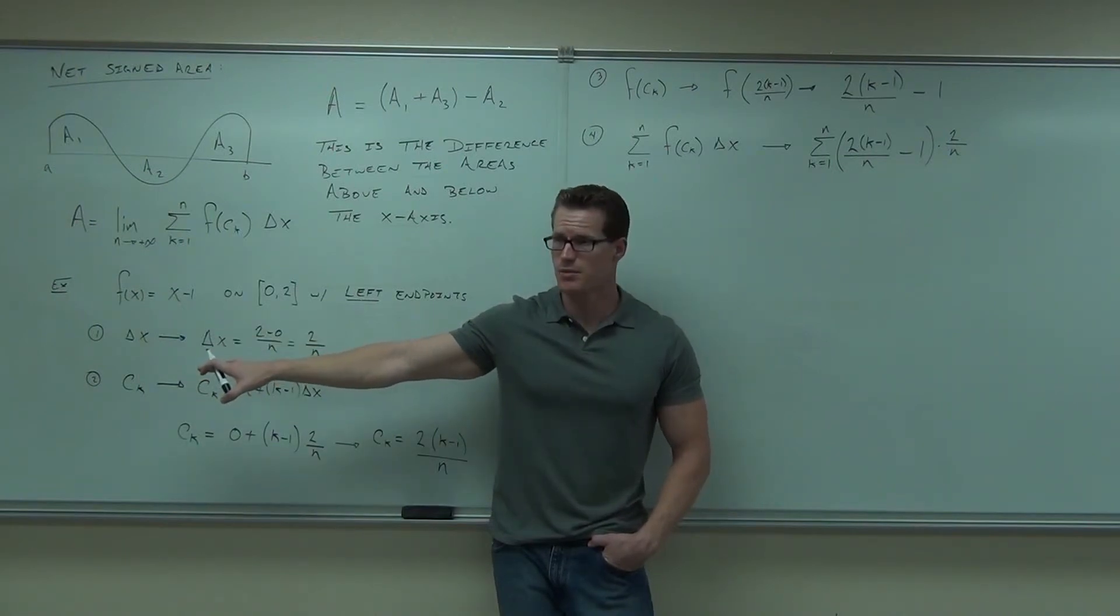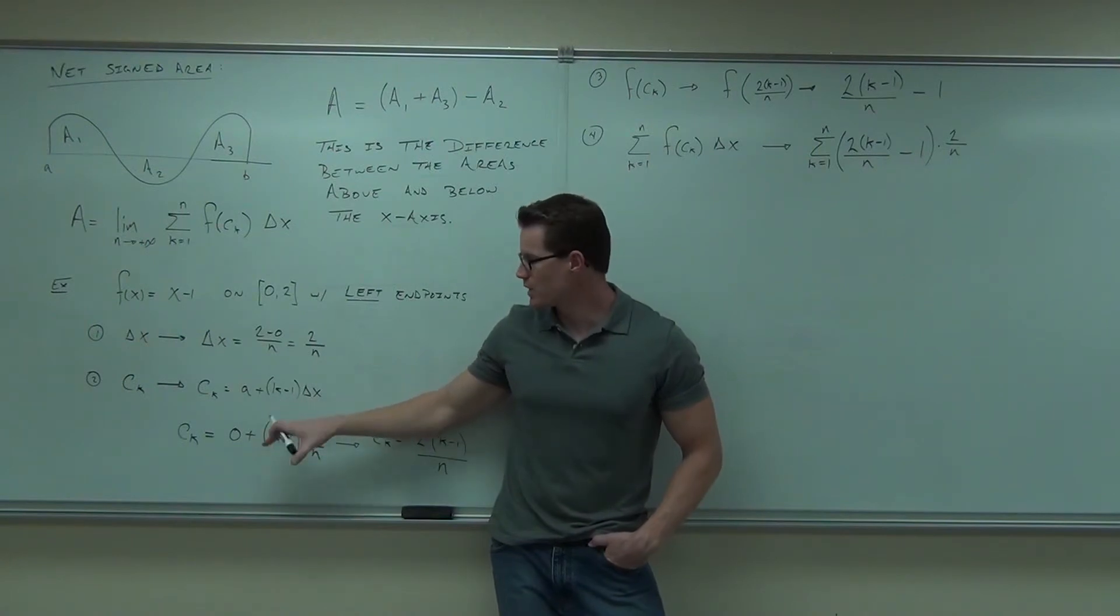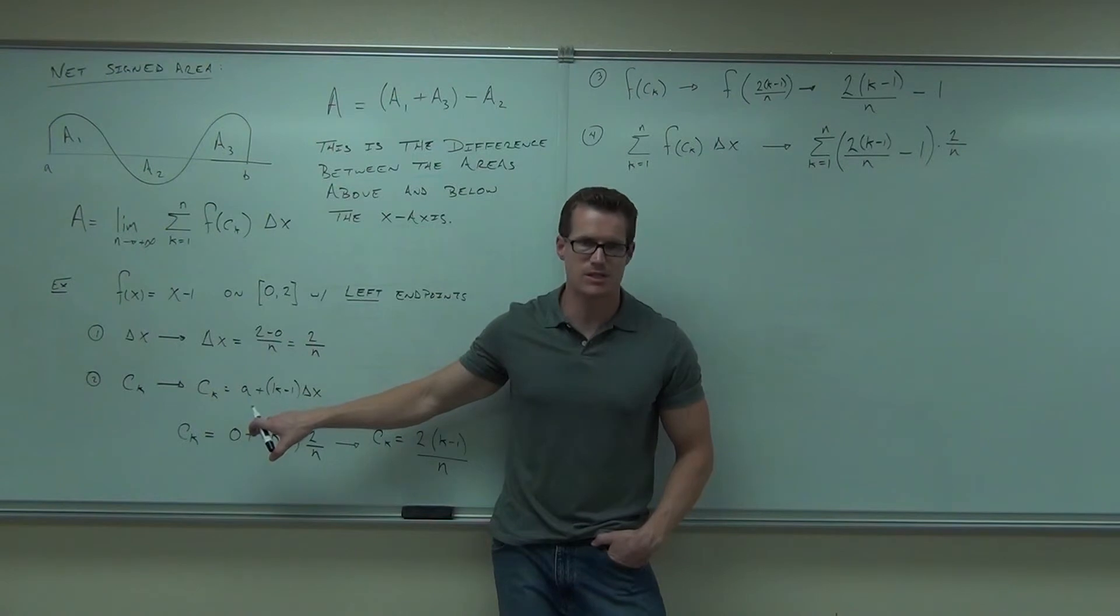That's x_k dot, the same thing, that means you're going to use a formula there. It's going to be either left, right, or mid. We have left in this case, that's why we use this formula. Remember that the right would have no minus 1, the mid would have minus 1/2, and you do the same exact thing.